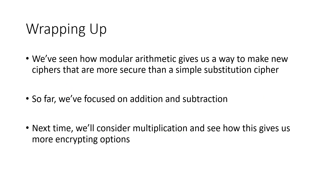To wrap things up, we've seen how modular arithmetic gives us a way to make new ciphers that are more secure than the simple substitution ciphers from the previous section. So far we've been focusing on addition and subtraction — addition to encrypt and subtraction to decrypt. Next time, we're going to talk about how multiplication can be involved, and we'll see how that gives us more encryption options.